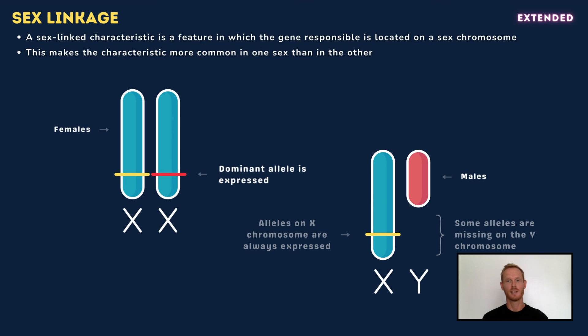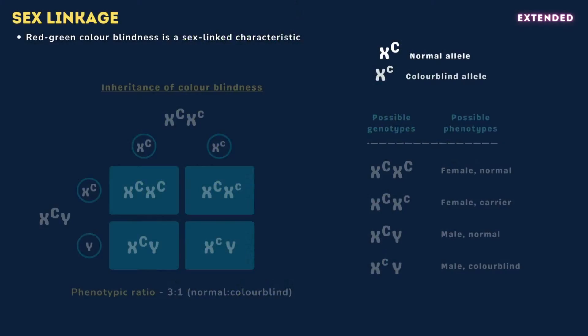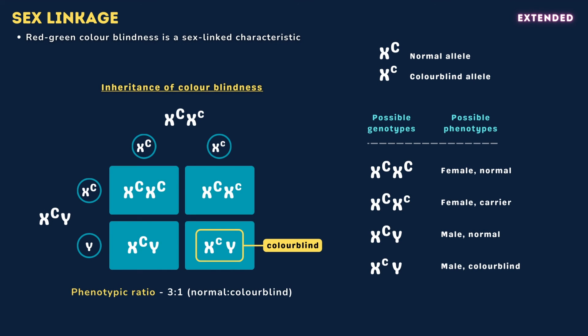In females, the chances of a recessive allele being expressed are much lower, as the allele on the other X chromosome could be dominant. Red-green colour blindness is a sex-linked characteristic; the allele is only present on the X chromosome and is recessive. If a female who carries the allele for colour blindness were to mate with a male with healthy colour vision, the possible genotypes in the offspring would be X^C X^C (a female with healthy vision), X^C X^c (a female carrier), X^C Y (a male with healthy vision), and X^c Y (a male with colour blindness).